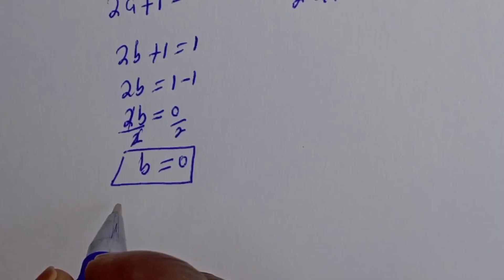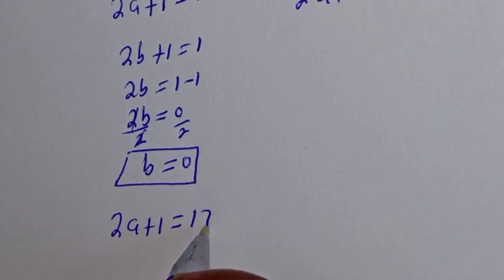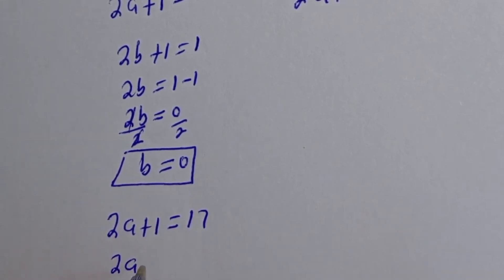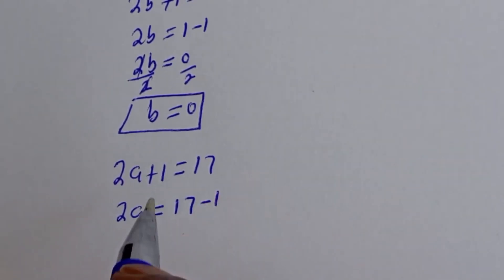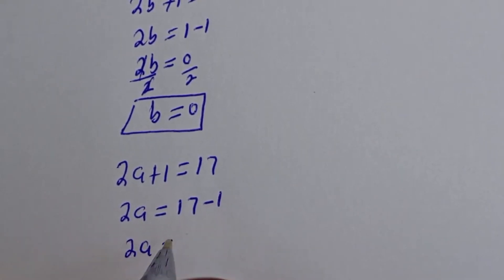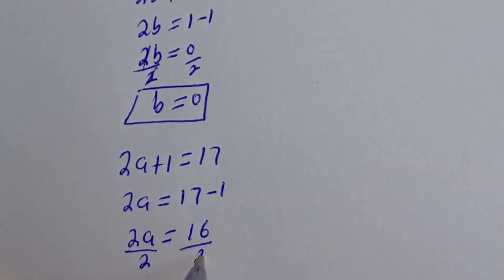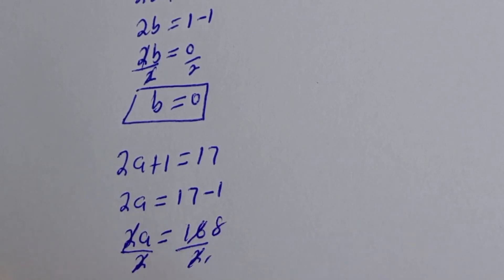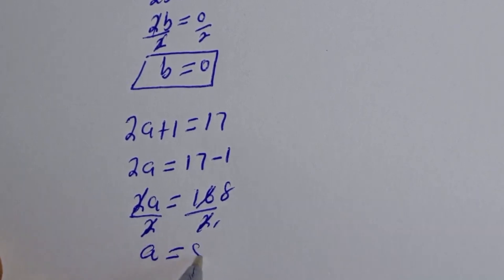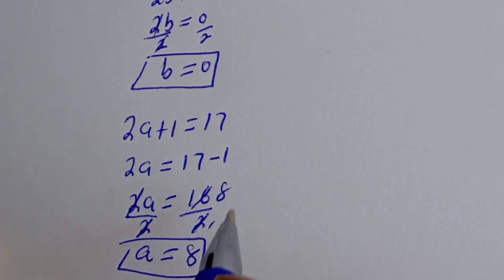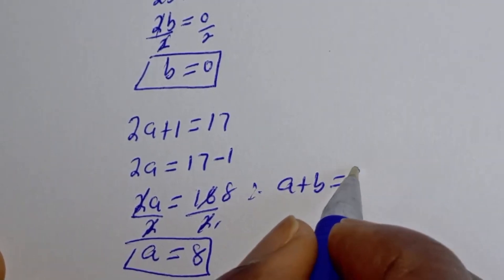From case 1: 2a plus 1 is equal to 17. Then 2a is equal to 17 minus 1. So 2a is equal to 16. Dividing both sides by 2, this cancels, giving a is equal to 8. Therefore a plus b is equal to 8.